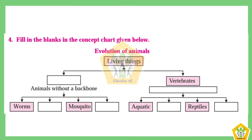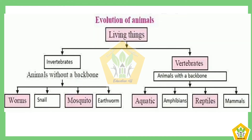Question number four: Fill in the blanks in the concept chart given below. On the basis of living things — animals without a backbone are called invertebrates; they include worms, snail, mosquito, and earthworm. Animals with a backbone are called vertebrates; they include aquatic animals, amphibians, reptiles, and mammals.